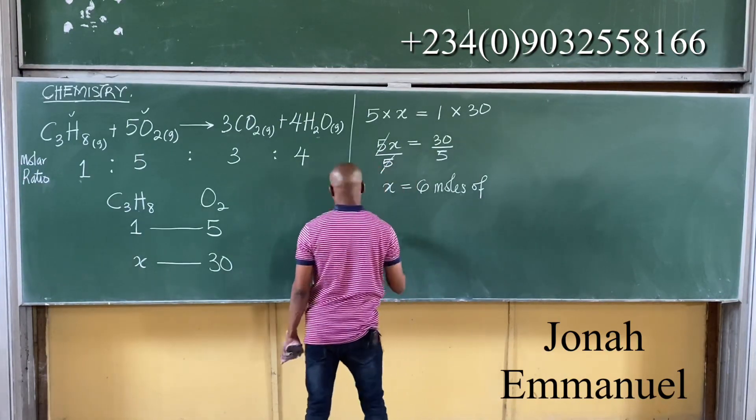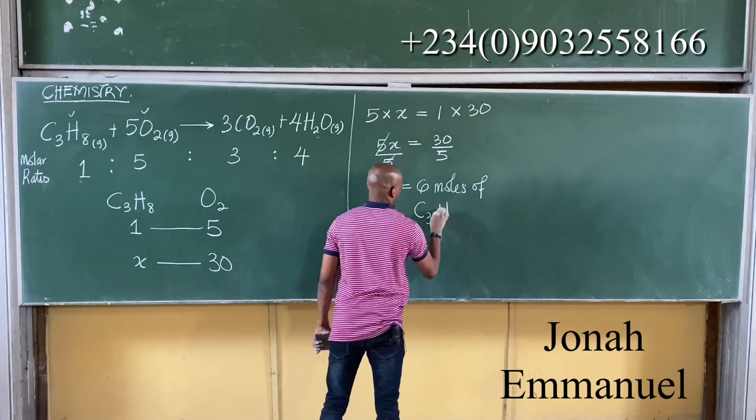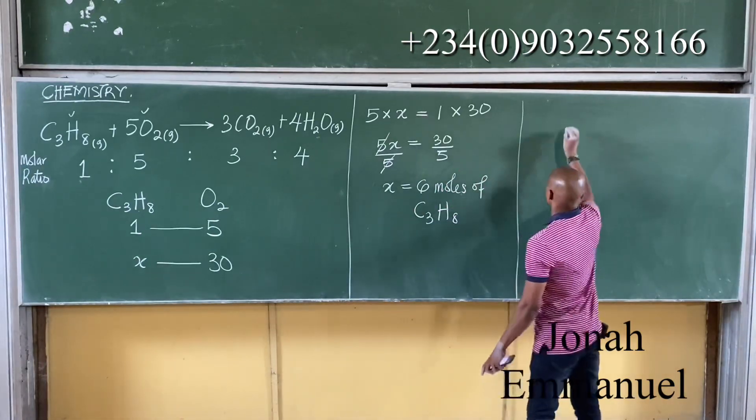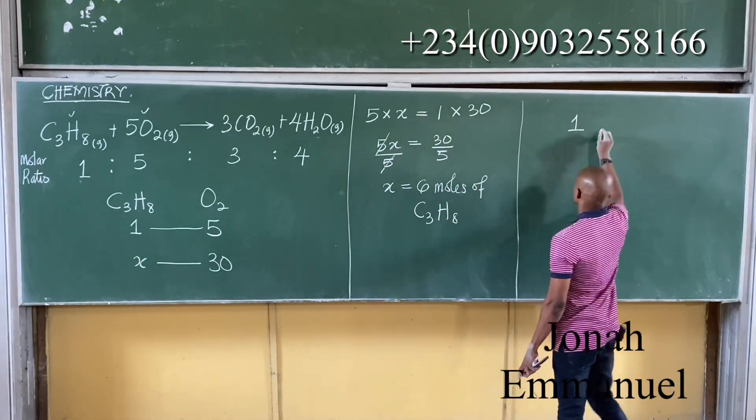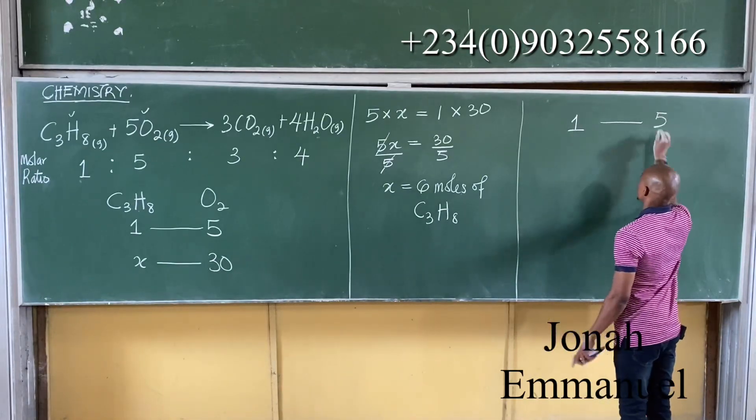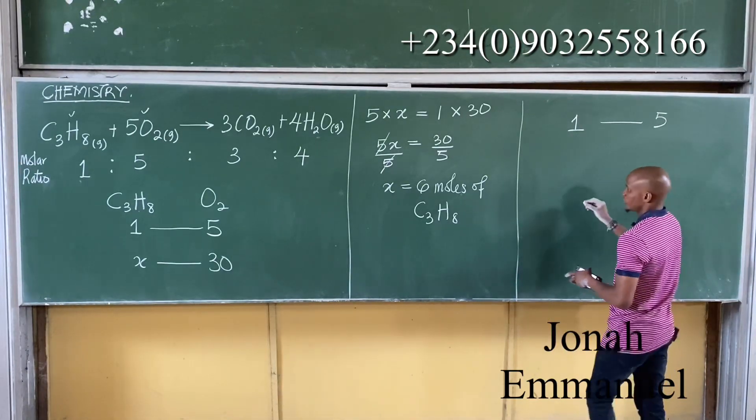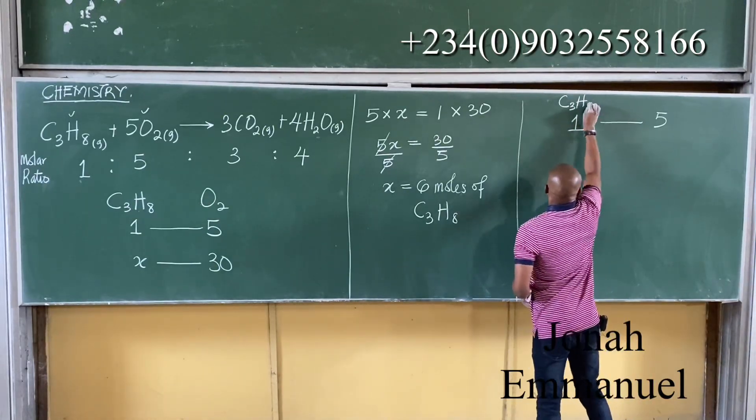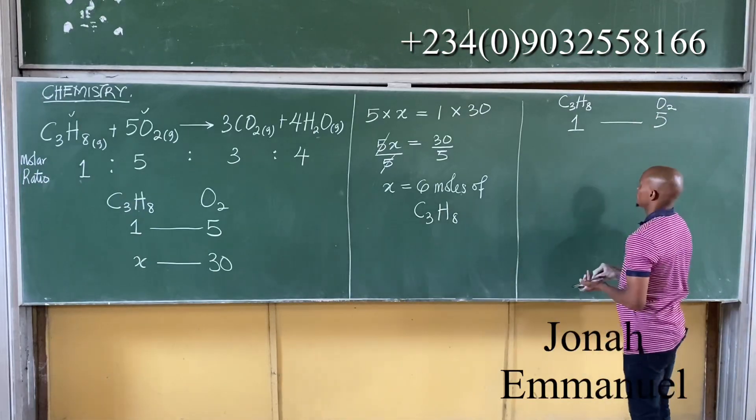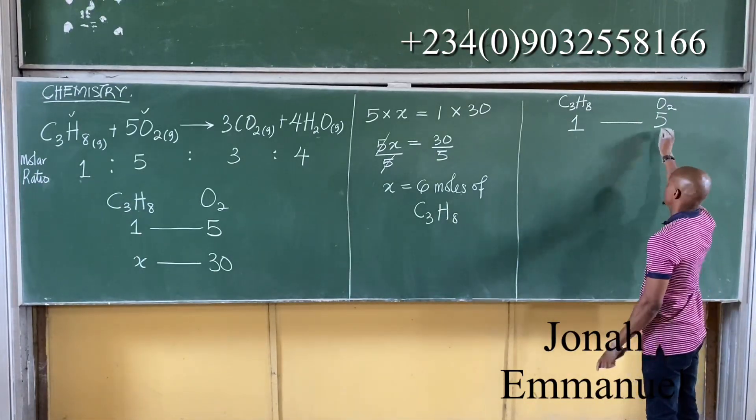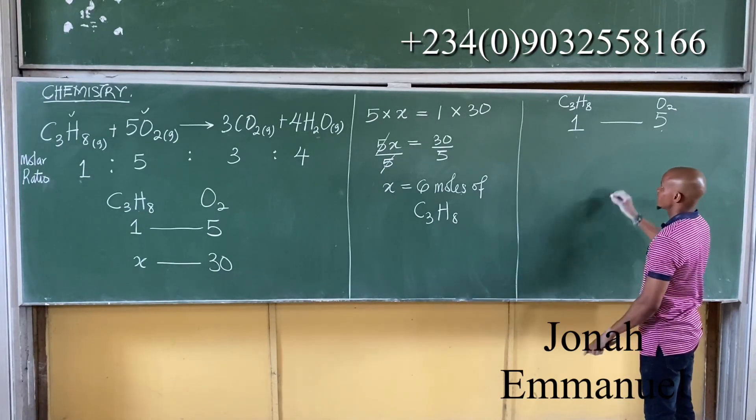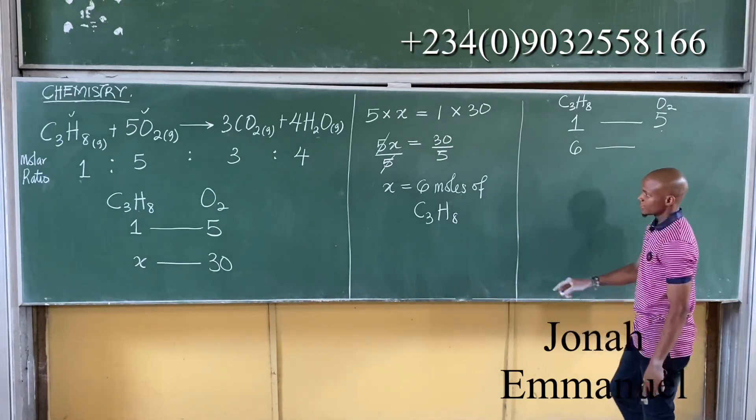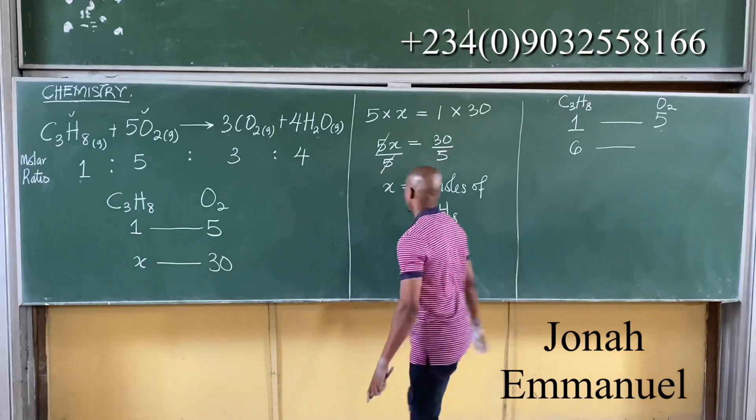6 moles of propane. So in here it is now clear that it takes 1 mole of propane to react with 5 moles of oxygen. Also, it takes from our calculation 6 moles of propane to react with 30 moles of oxygen.